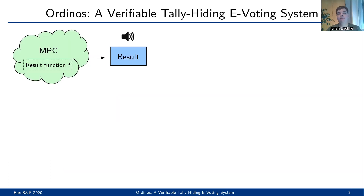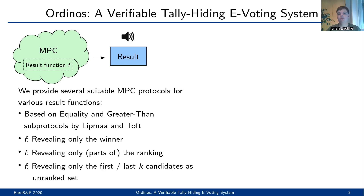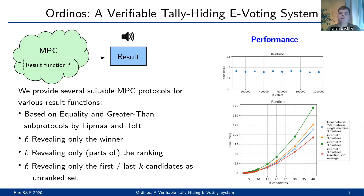So, what we did is we constructed several suitable MPC protocols supporting various result functions. The MPC protocols are based on the equality and greater-than tests by Lipmaa and Toft. We even implemented the Ordinus system and showed that it is practical. The first plot demonstrates that running time is independent of any specific number of voters. The next plot shows that Ordinus is practical for even 40 candidates, independently of whether the implementation runs over a local network or the Internet. The determining factor in terms of performance is the number of candidates.